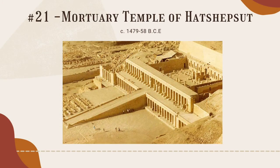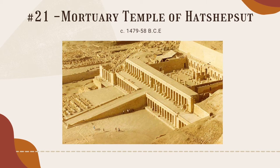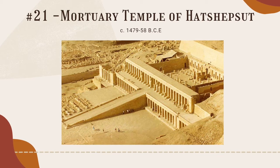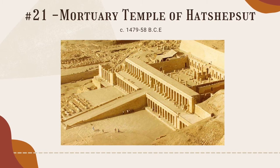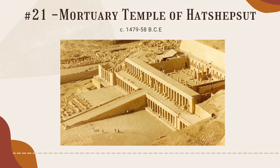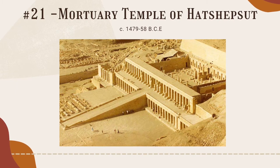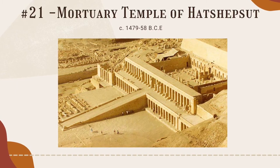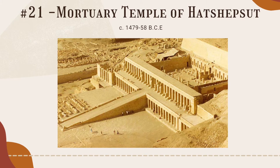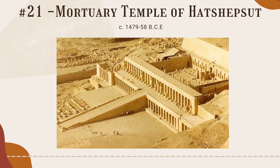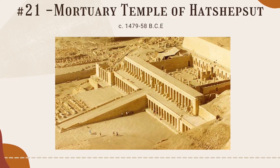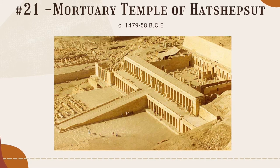The next image on the required list is the mortuary temple of Hatshepsut. Not only is it an iconic work of ancient Egyptian architecture, but it is also the final resting place of one of its most powerful women. Hatshepsut was the fifth pharaoh of the illustrious 18th royal dynasty — a daughter, wife, and stepmother to pharaohs, and the second woman in Egyptian history to take the pharaonic throne in her own right.